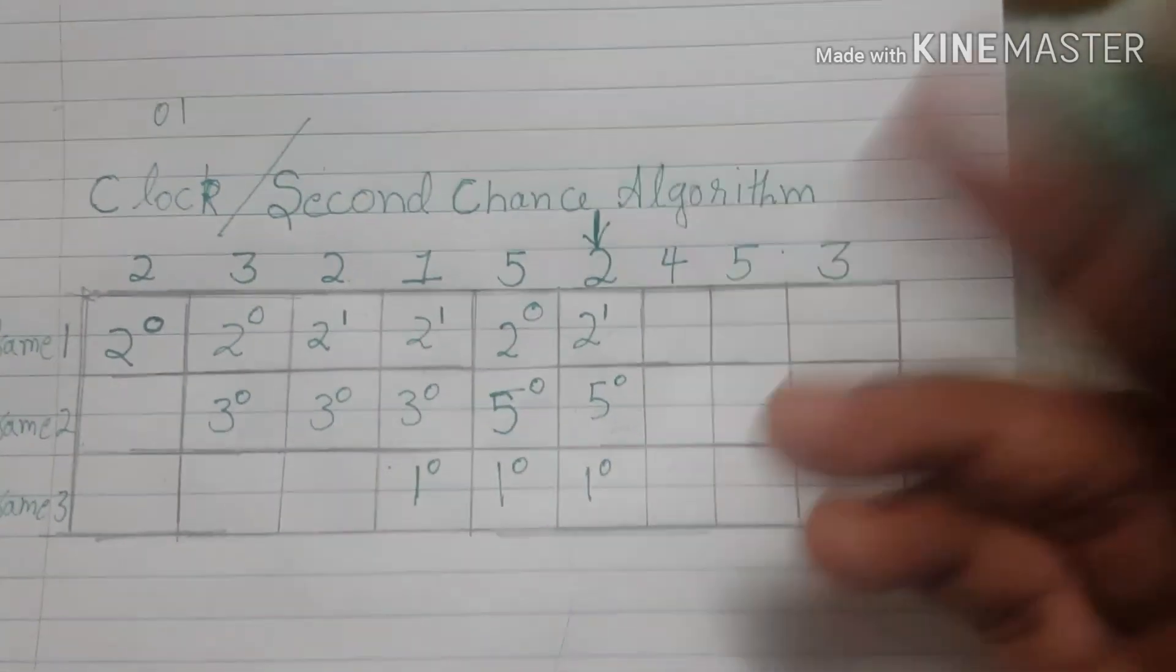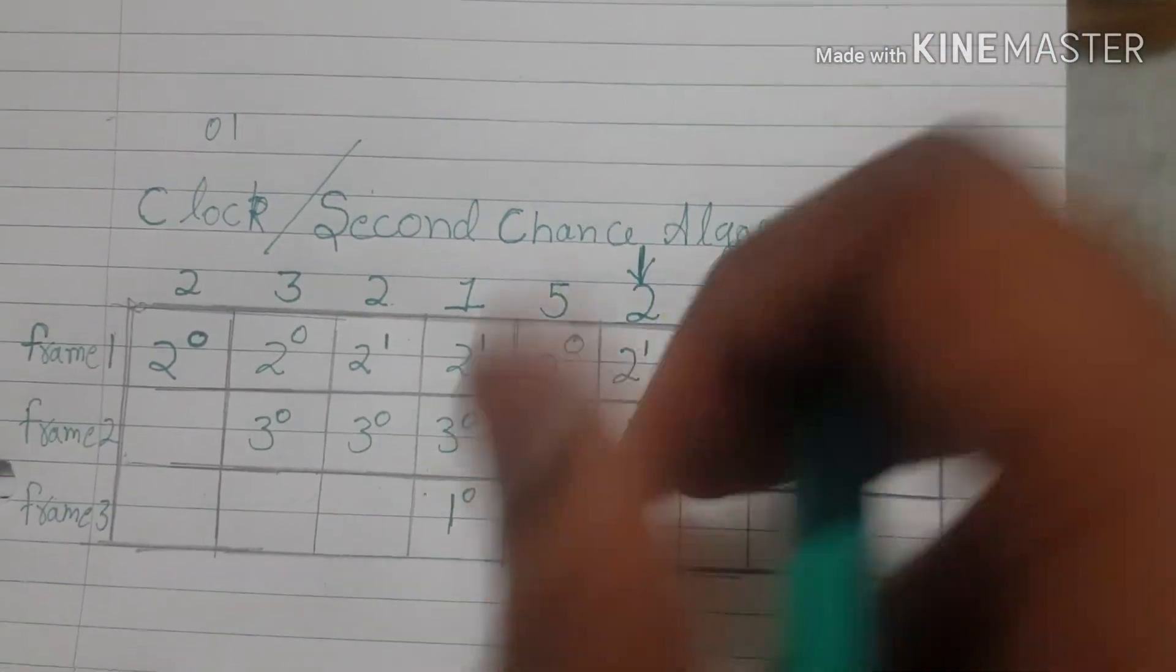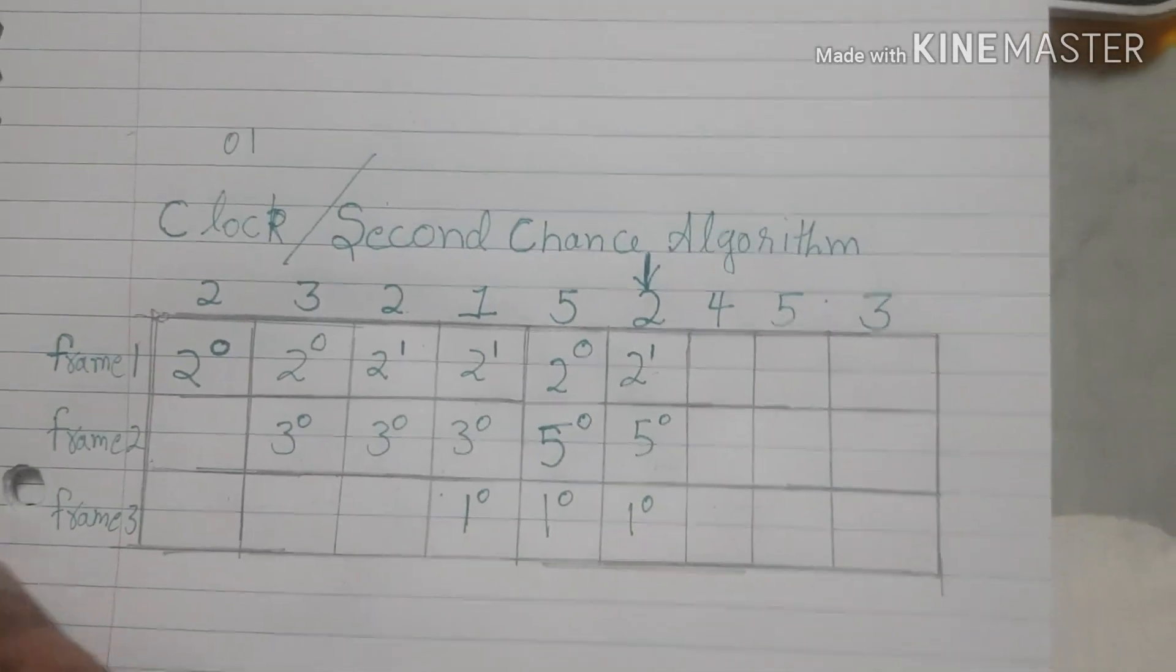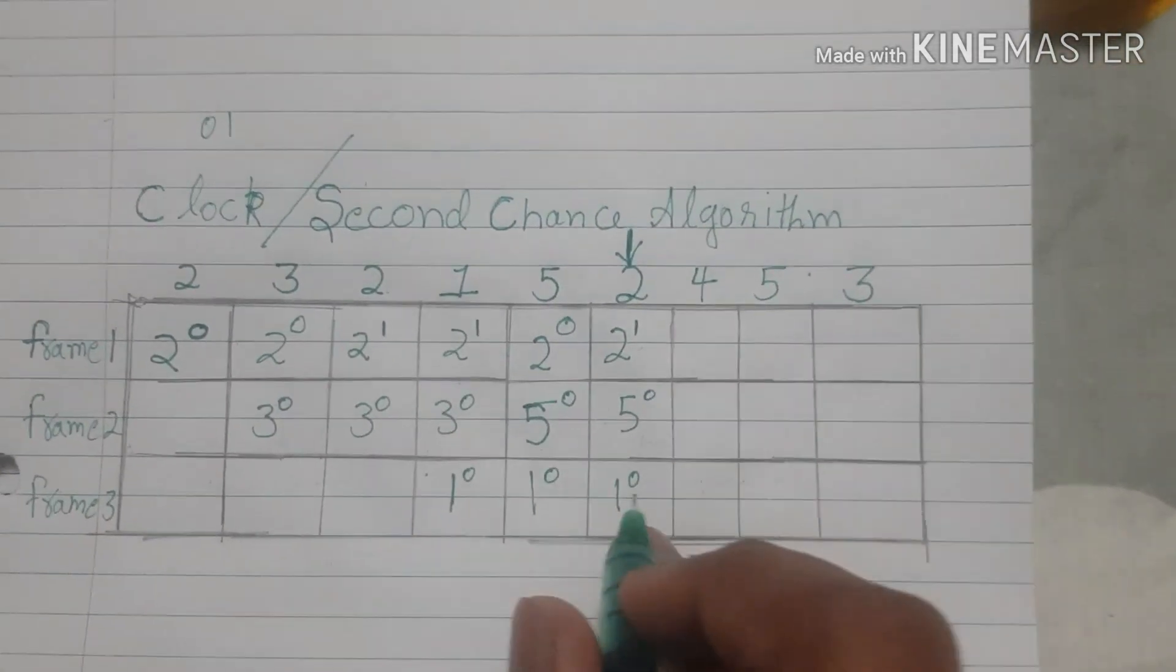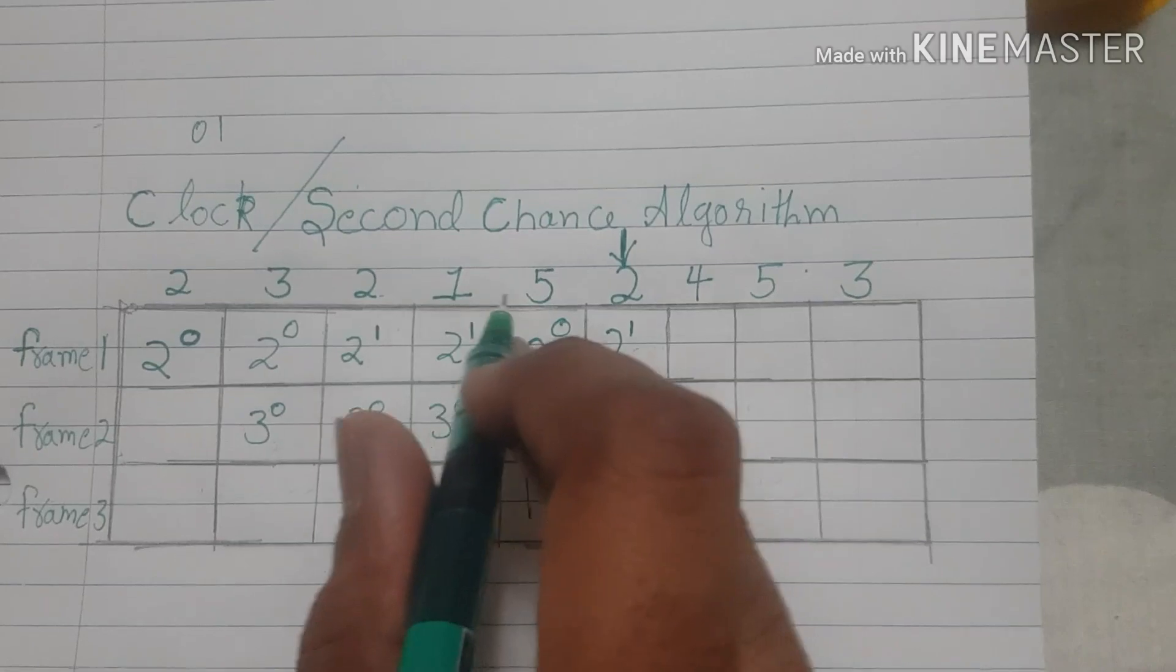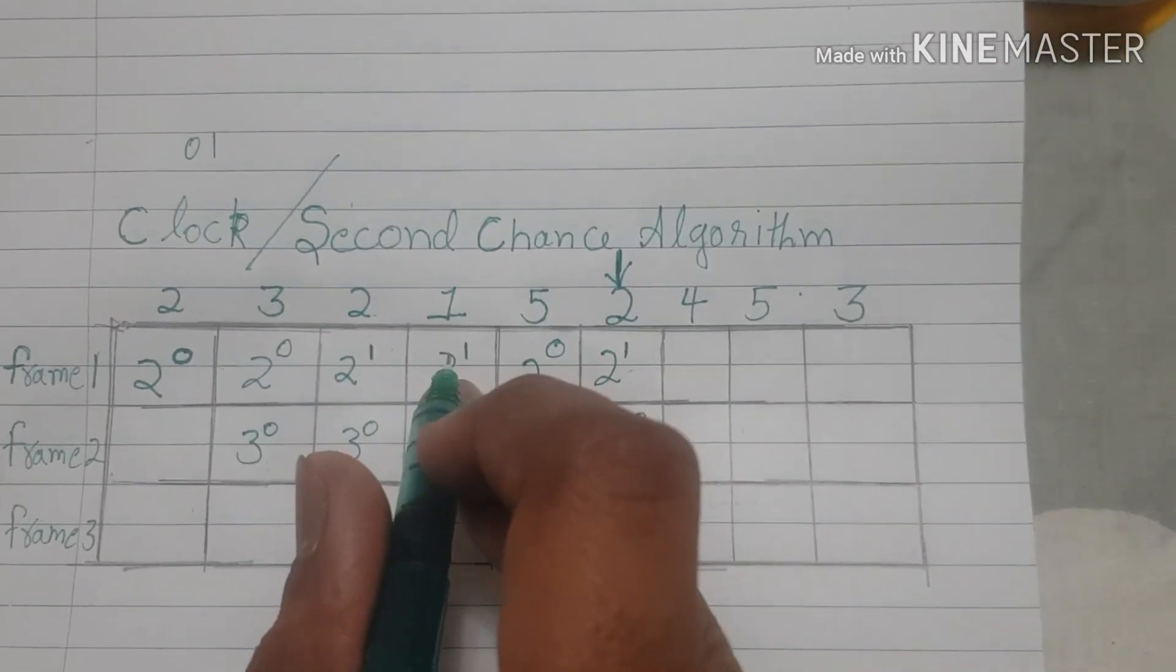When we come to 4, once again all our frames are filled out. So we have to go by first in first out and this time as I said you have to go from 1, because that is the one that was least recently used.